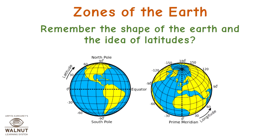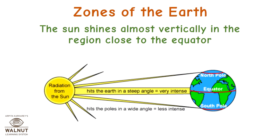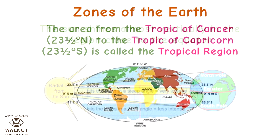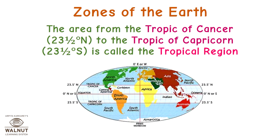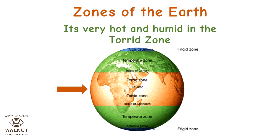Zones of the earth. Remember the shape of the earth and the idea of latitudes. The sun shines almost vertically in the region close to the equator. The area from the Tropic of Cancer to the Tropic of Capricorn is called the tropical region. It's very hot and humid in the torrid zone.